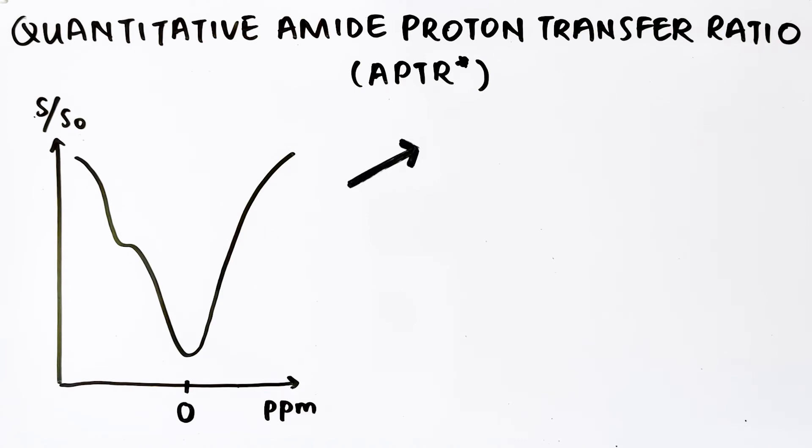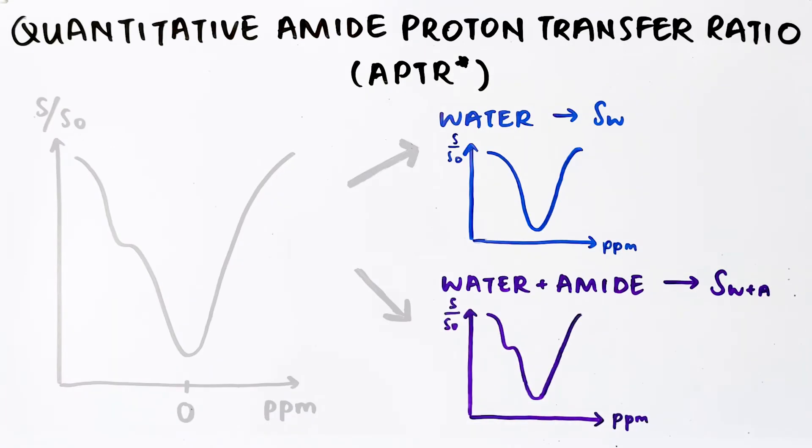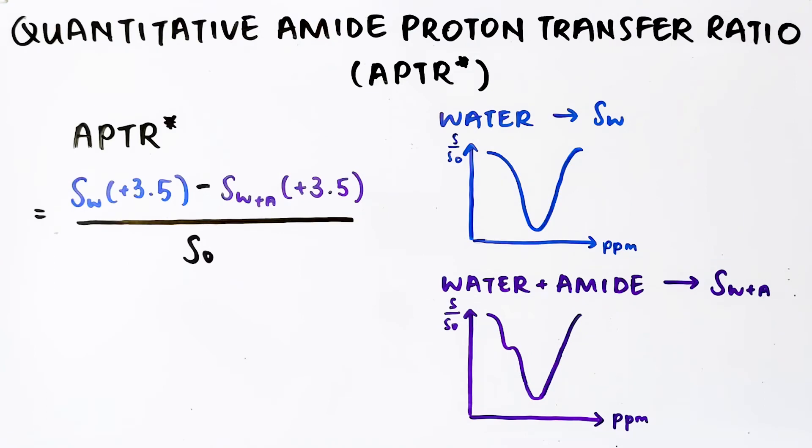reconstruct the one-pool model Z-spectrum consisting of just water, and the two-pool model Z-spectrum consisting of both water and amide. Quantitative APTR is then calculated as the difference between the two Z-spectra at 3.5 parts per million.